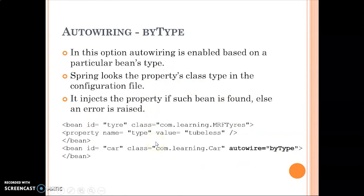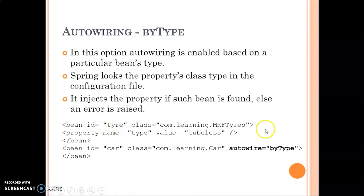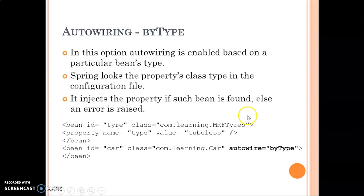There are two problem scenarios with auto-wiring by type. First, if no bean of the matching class type is found it will raise an error. Second, if there are more than one bean of the same type — for example, two beans both of class MRF Tires — it will also raise an error. So exactly one bean of that type must exist. The attribute to use is autowire equals to 'byType', and note that this is case-sensitive.